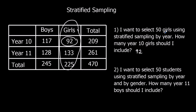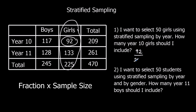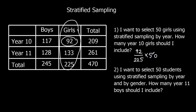How many girls in total? 225. So we've got 92 out of 225 in total — that's the fraction of year 10 girls. And if I want 50, I'm going to multiply by 50. I want that fraction of the 50. So there'll be 50 people in the sample, and that fraction should be in year 10.